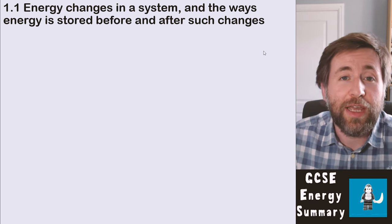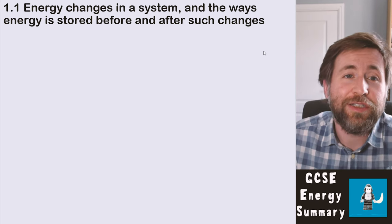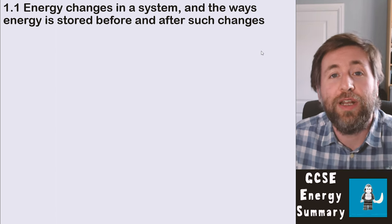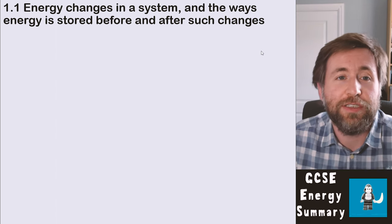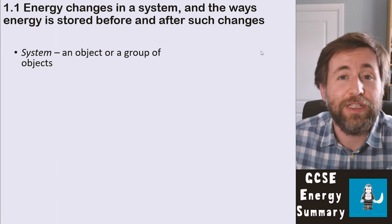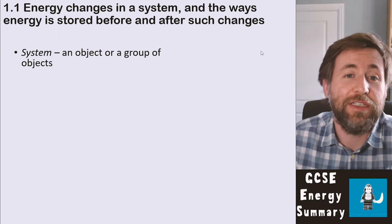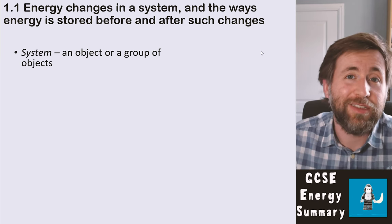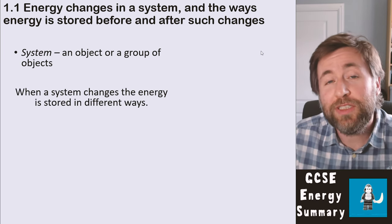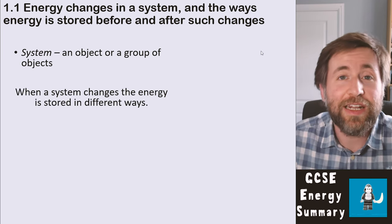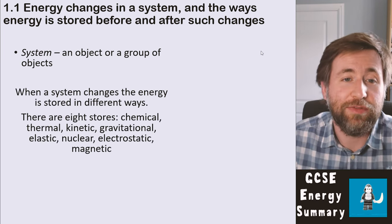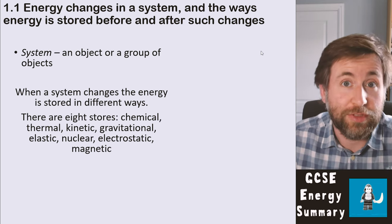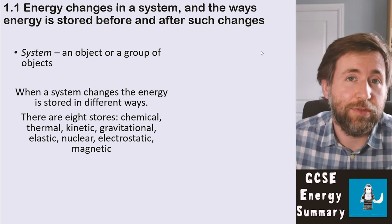Part one covers energy changes in systems and the way that energy is stored before and after such changes. A system is simply an object or a group of objects. When a system changes, the energy is stored in different ways, and there are eight stores — eight ways to store energy.